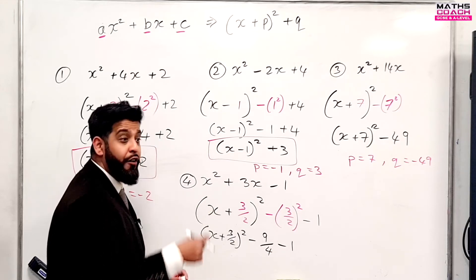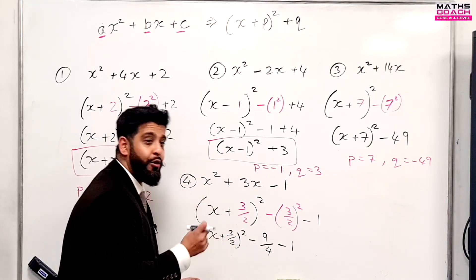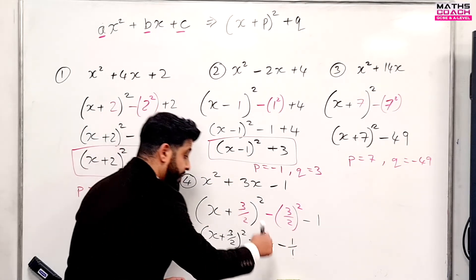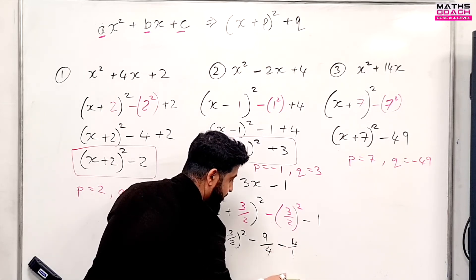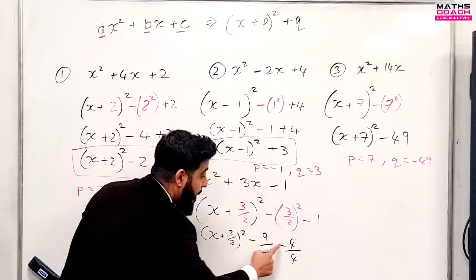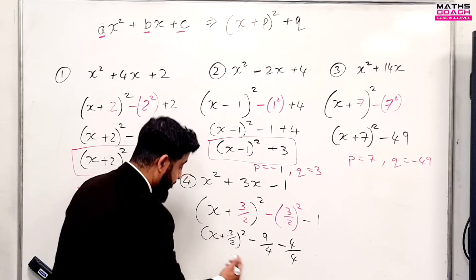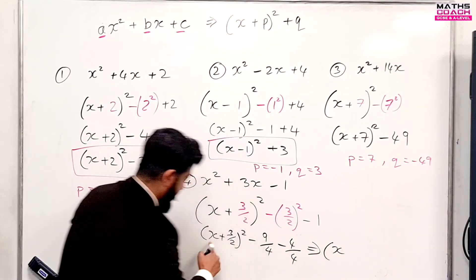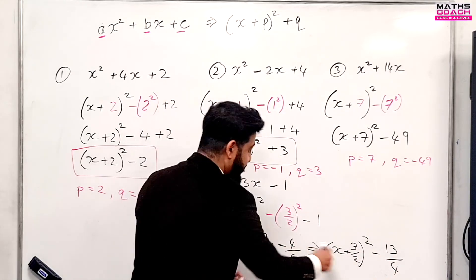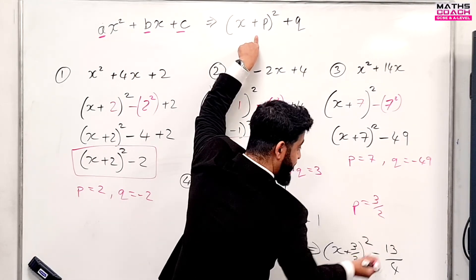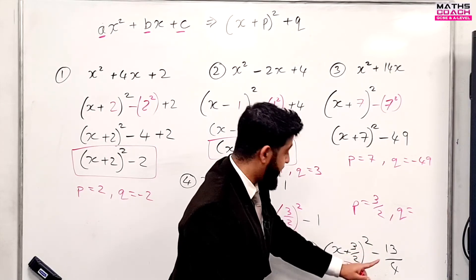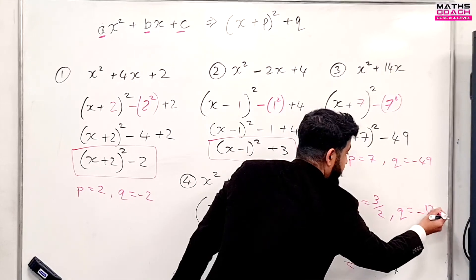We need to make that one into a fraction with a denominator of four. One equals four over four. So now we do minus nine over four, minus four over four, which gives minus thirteen over four. The final result is X plus three over two, all squared, minus thirteen over four. So P equals three over two, and Q equals minus thirteen over four — because the bracket has a plus and our answer is negative, so we say minus thirteen over four.